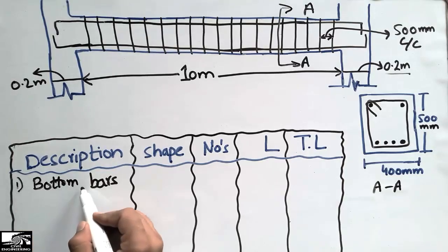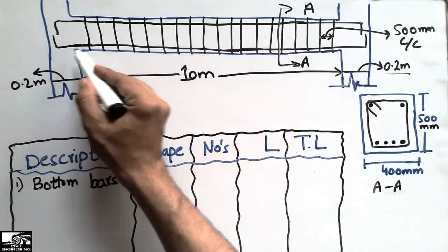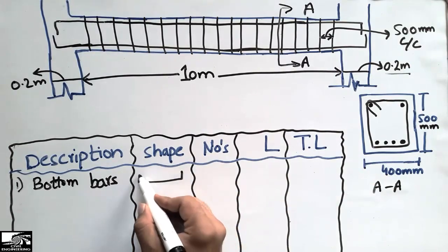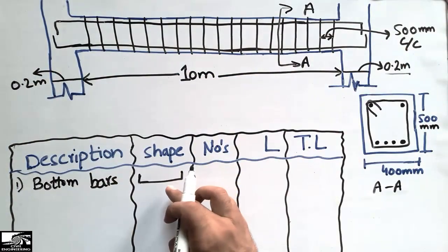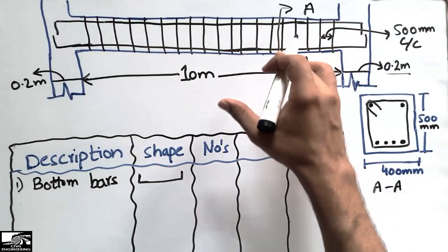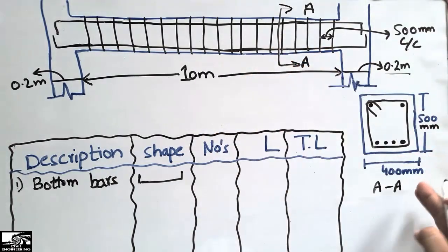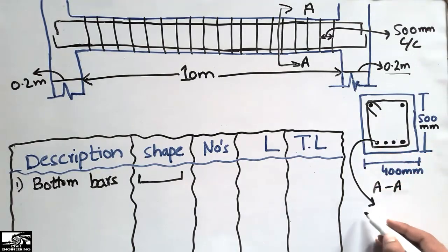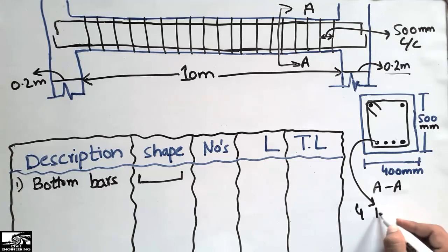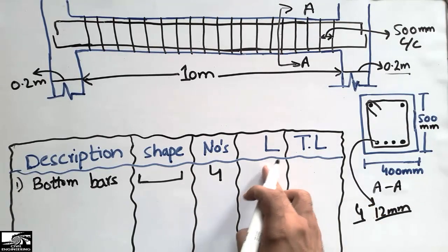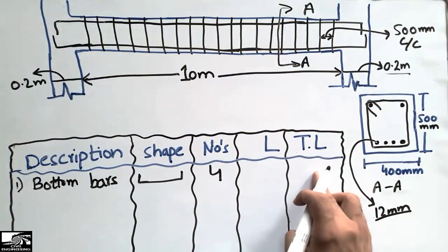The shape of the bottom bars, as you can see, is hooked at both ends. These are four in number, as seen in the cross-section, and they are 12 millimeter diameter bars — four numbers of 12mm dia bars. Now I want to find the length of these bottom bars.